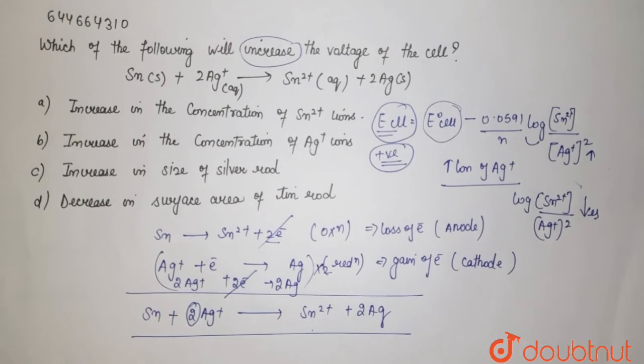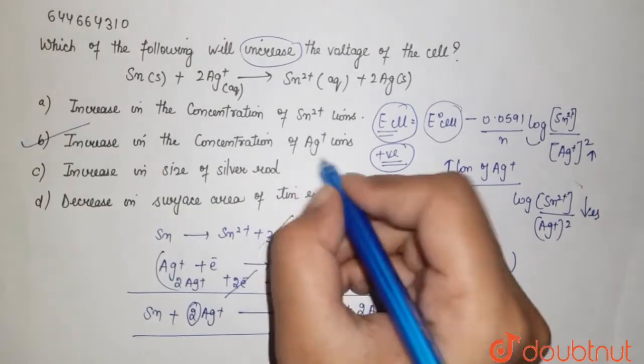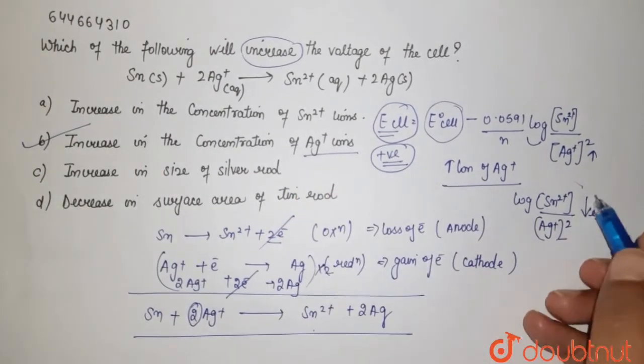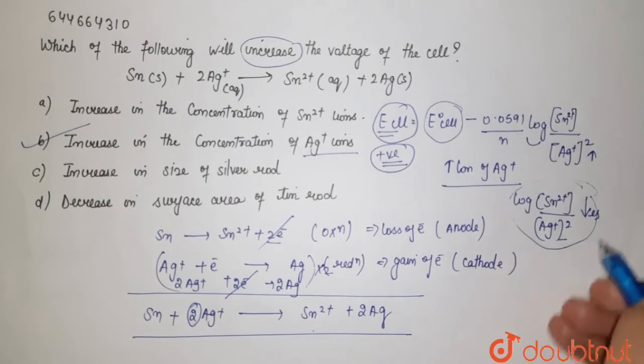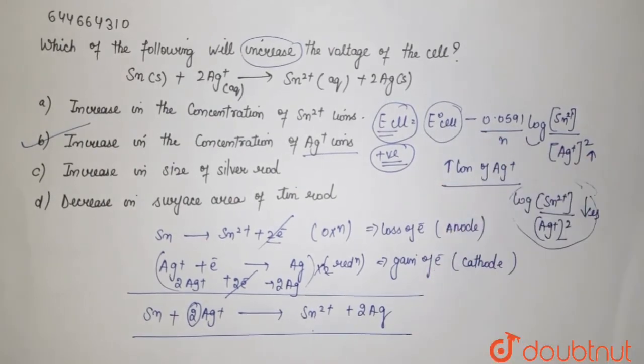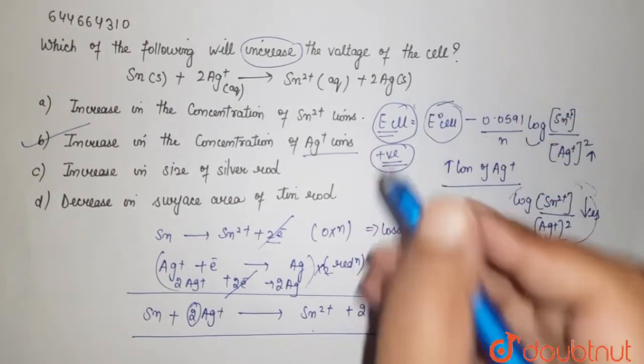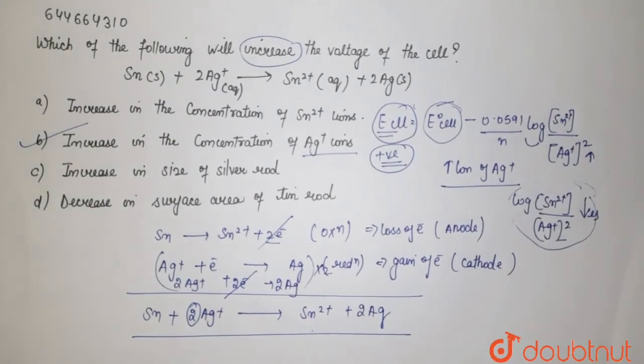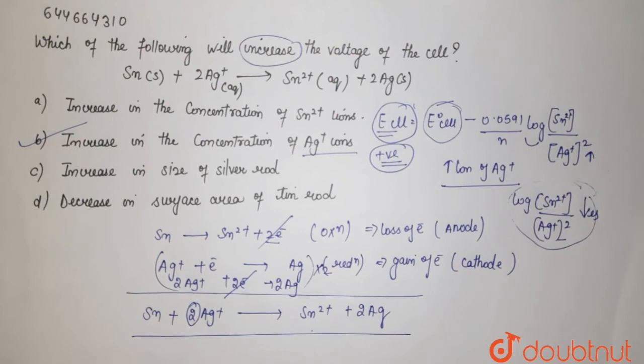So that's why the answer is that if we increase the concentration of your Ag plus then this whole value decreases. If this whole value decreases then we subtract less value from your E naught cell. Ultimately we get a positive value, that is E cell will have increased value in the voltage. So B option will be your right answer.